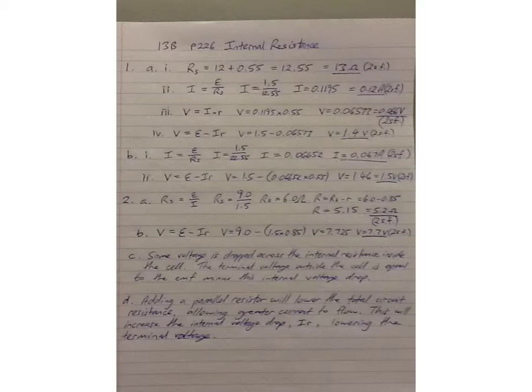Right, so number two, a cell with an EMF of 9 volts and internal resistance of 0.85 ohms is connected to a circuit, and a resistor R, the unknown value, allows a current of 1.5 amps to be drawn. A, calculate that resistance, R.